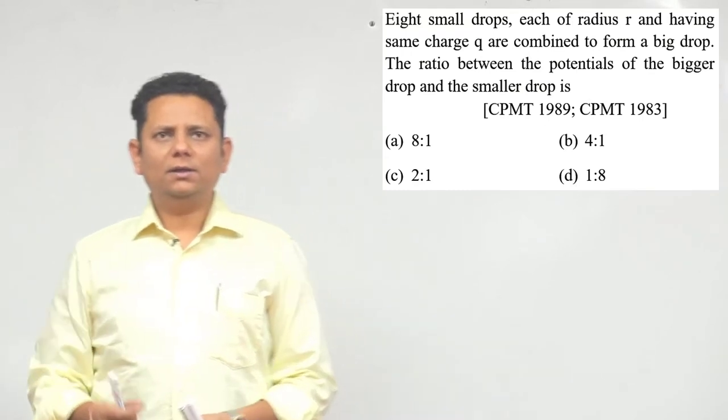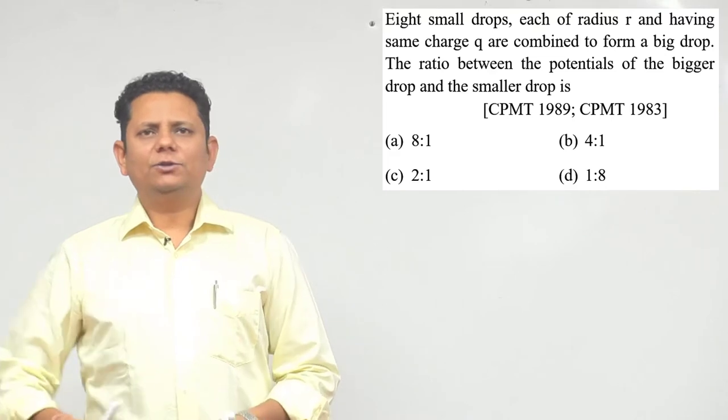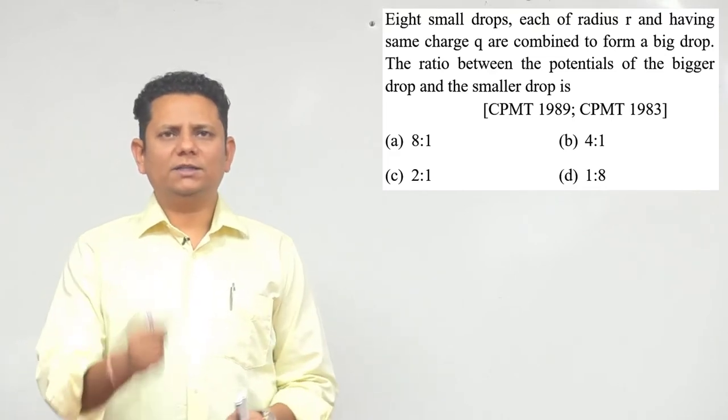The next question says: eight small drops, each of radius r and having the same charge q, are combined to form a big drop. The question asks for the ratio between the potentials of the bigger drop and the smaller drop.